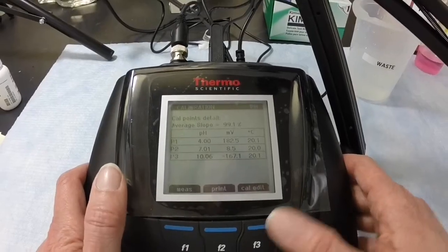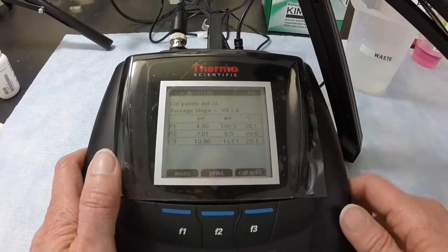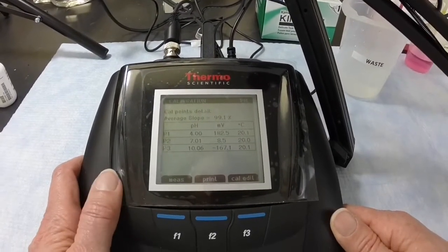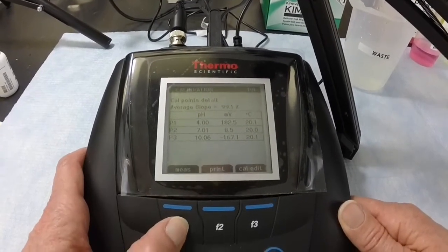The average slope will display at the top of the calibration table. We have a slope of 99.1 percent, which is great. So we're all done. We press measure, and we return to the measure screen. We are ready to make a pH measurement.